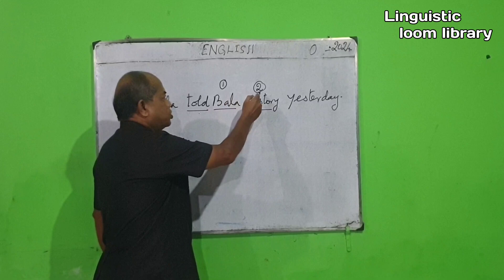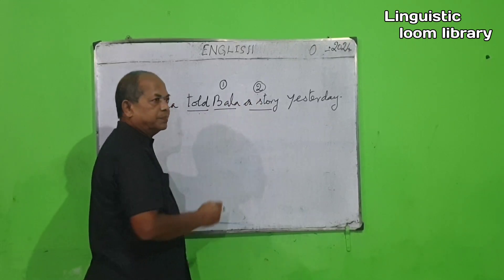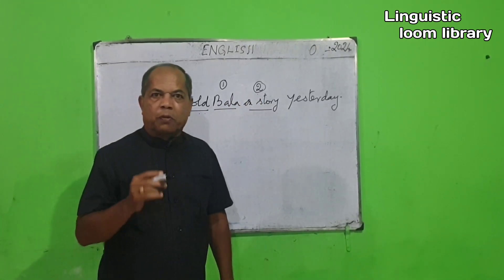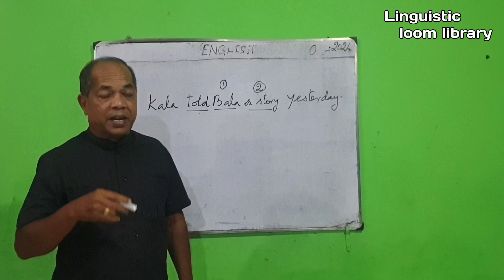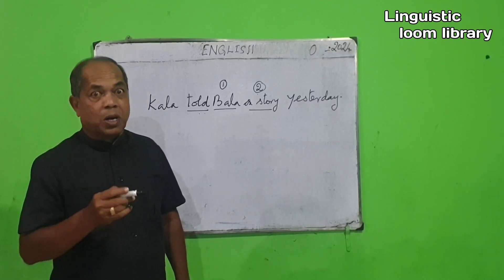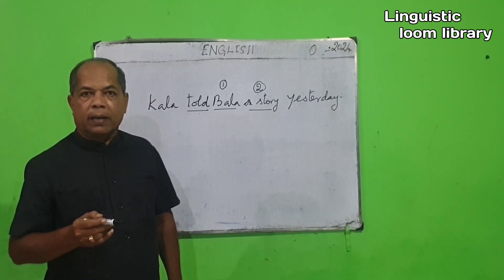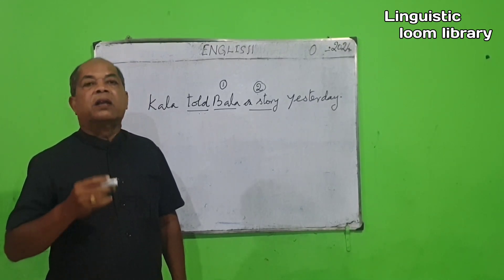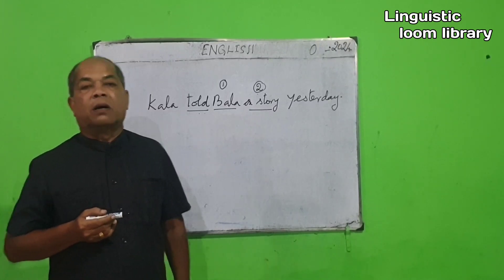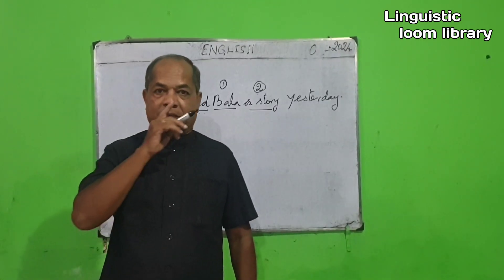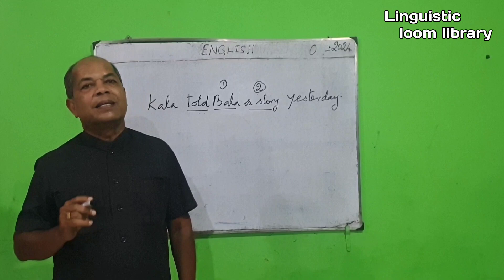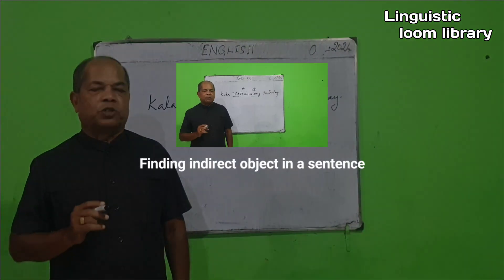The suitability should be made with the noun that comes under number two after the verb. Then, using the question word and the verb, frame a question. The answer to that question is the direct object.